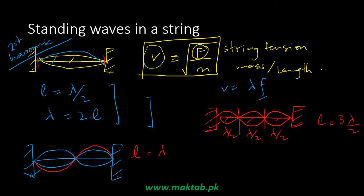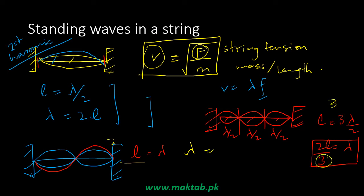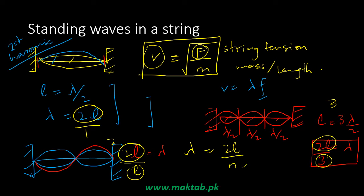Now we have a relationship. I can write it as: 2 times L over 3 is equal to lambda. Looking at the generic formula — this is the first harmonic, this is the second harmonic, this is the third harmonic. In the third harmonic n is 3, in the second harmonic n is 2, in the first harmonic n is 1. The numerator is always 2L, so lambda equals 2L divided by n, where n is our harmonic number.